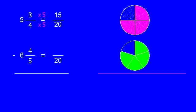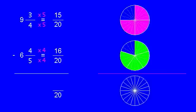Going from fifth to twentieth, the multiple is four, four times four is 16. So we see that we don't have enough pieces to give away. We have 15, but we need to give away 16. So how do we get more pieces?